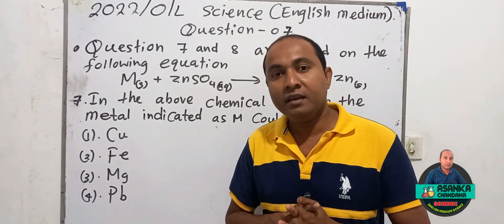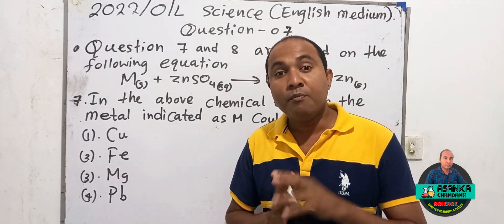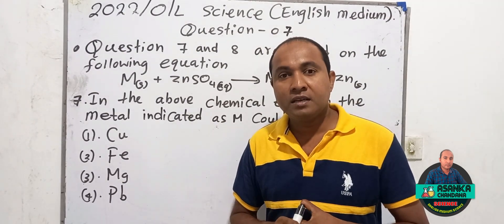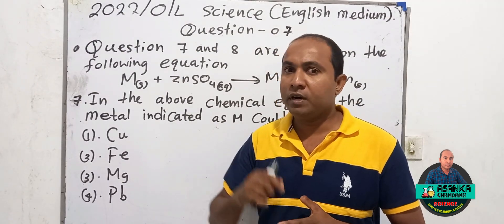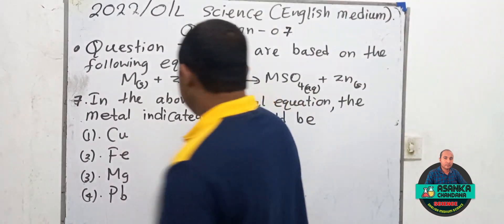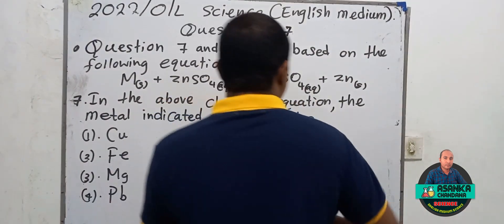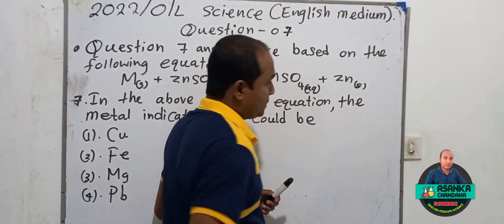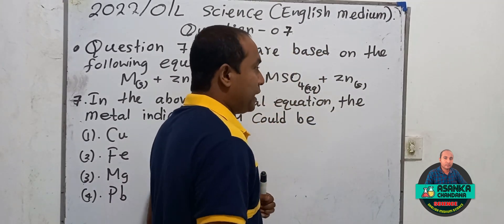Definitely, M should be above the metal zinc — above the metal zinc in the reactivity series.